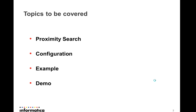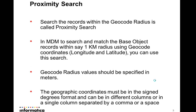What is proximity search, how to configure proximity search, one example for the same, and a quick demo. Searching for records within a geocode radius is called proximity search in MDM. If you want to search and match records within some geocode radius — say one kilometer or a few kilometers — using geocode coordinates like longitude and latitude, then you can use this method.